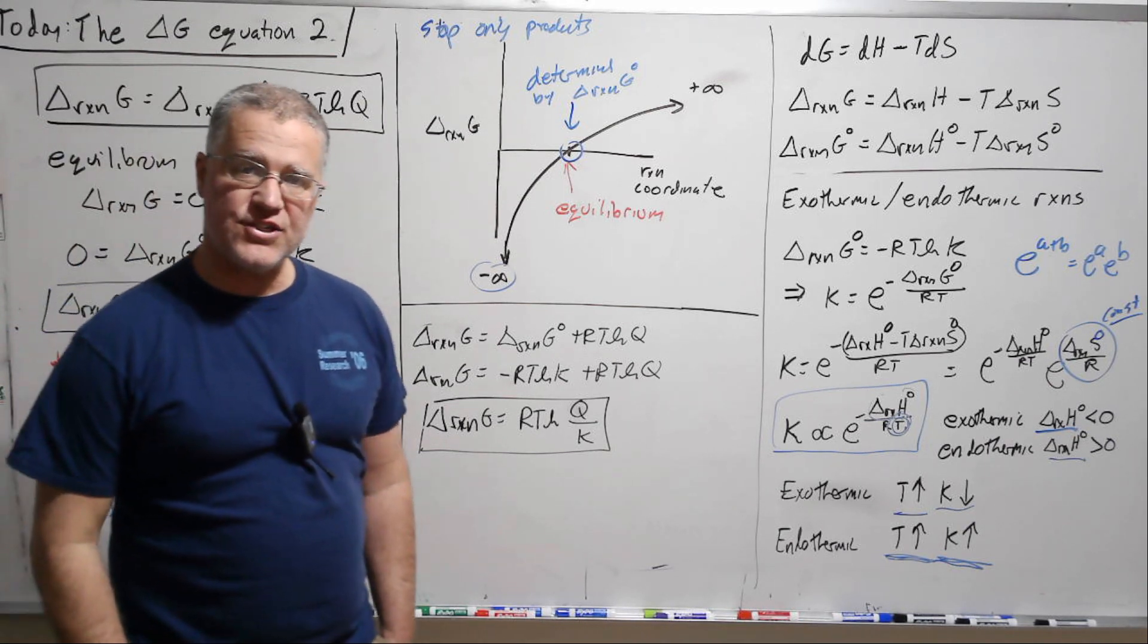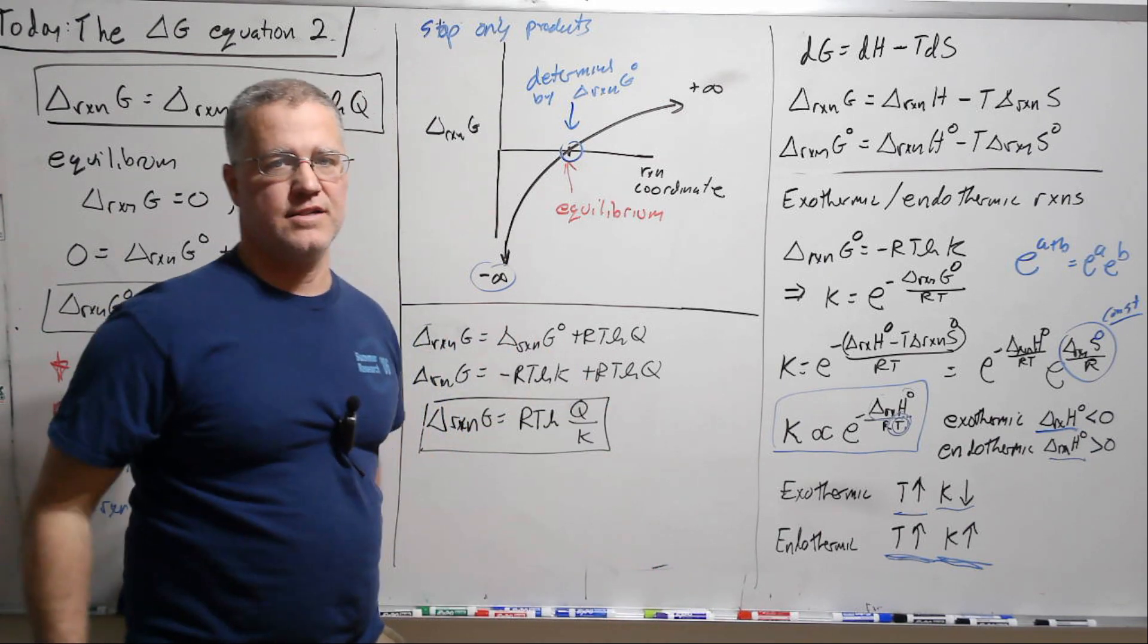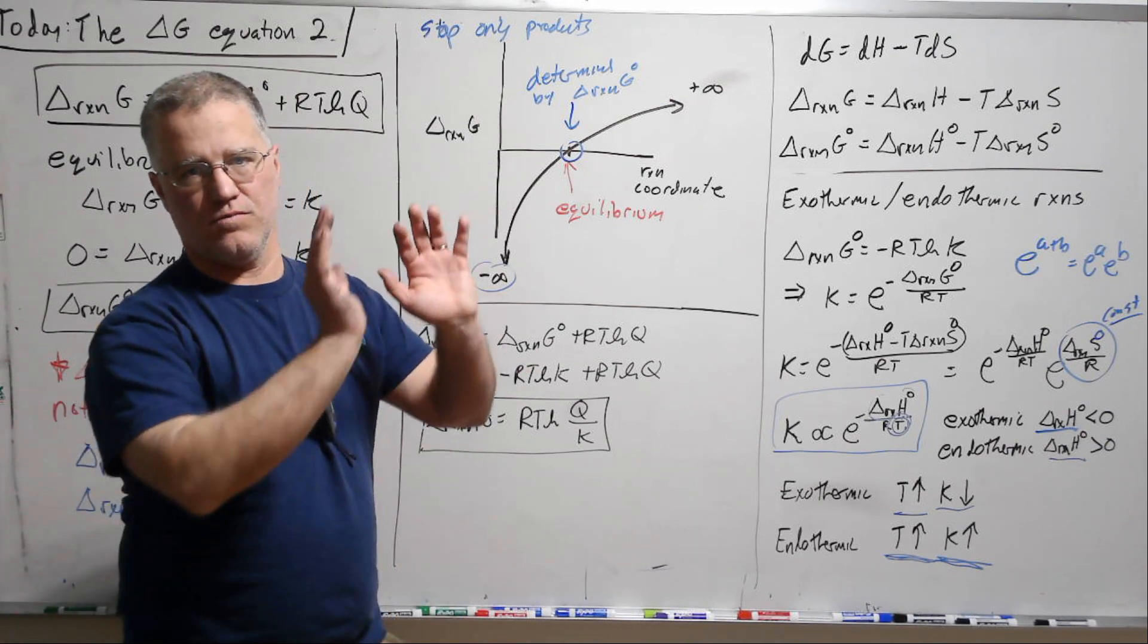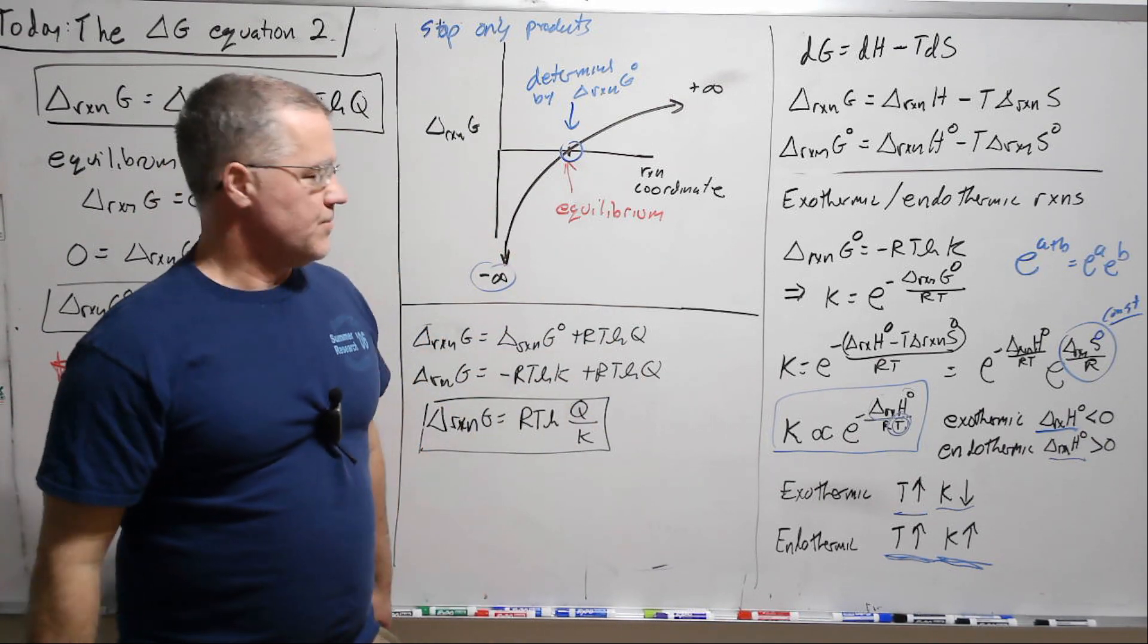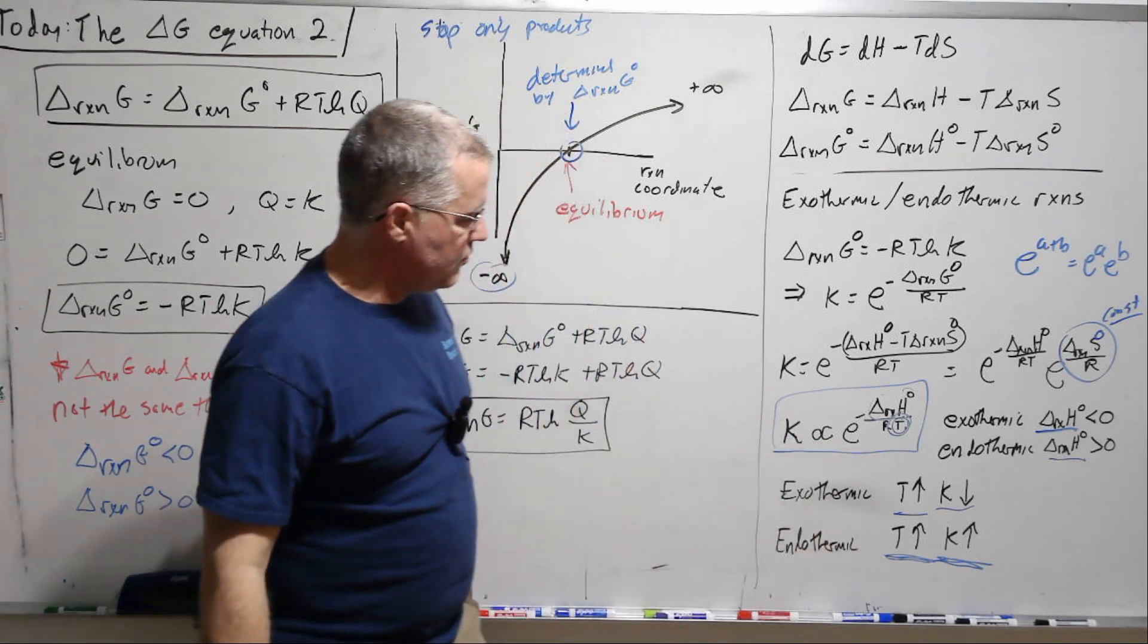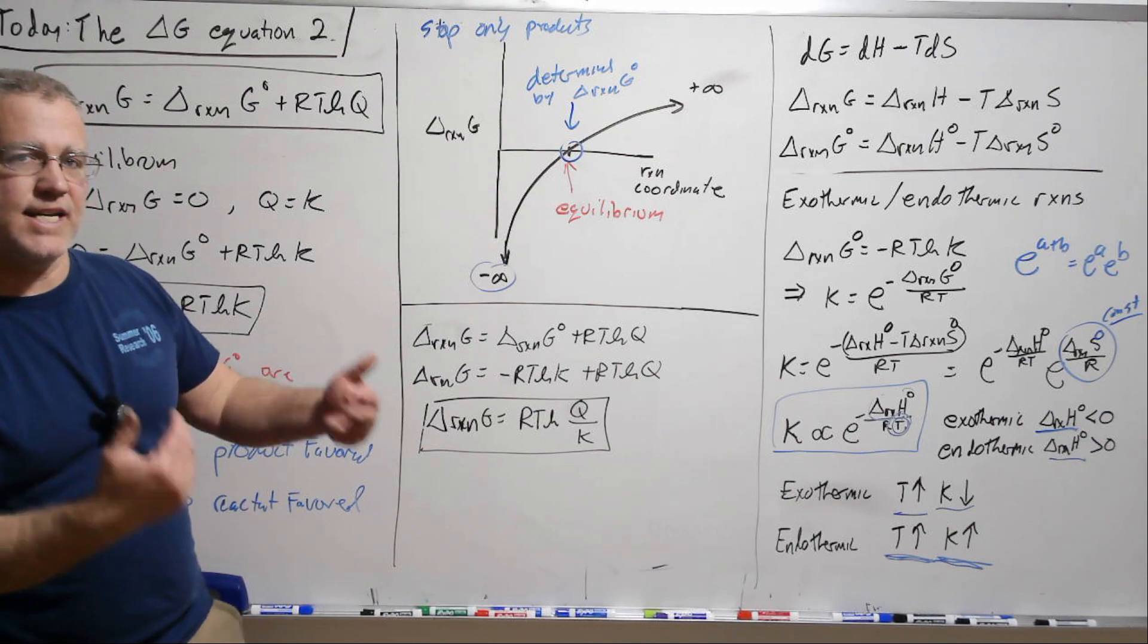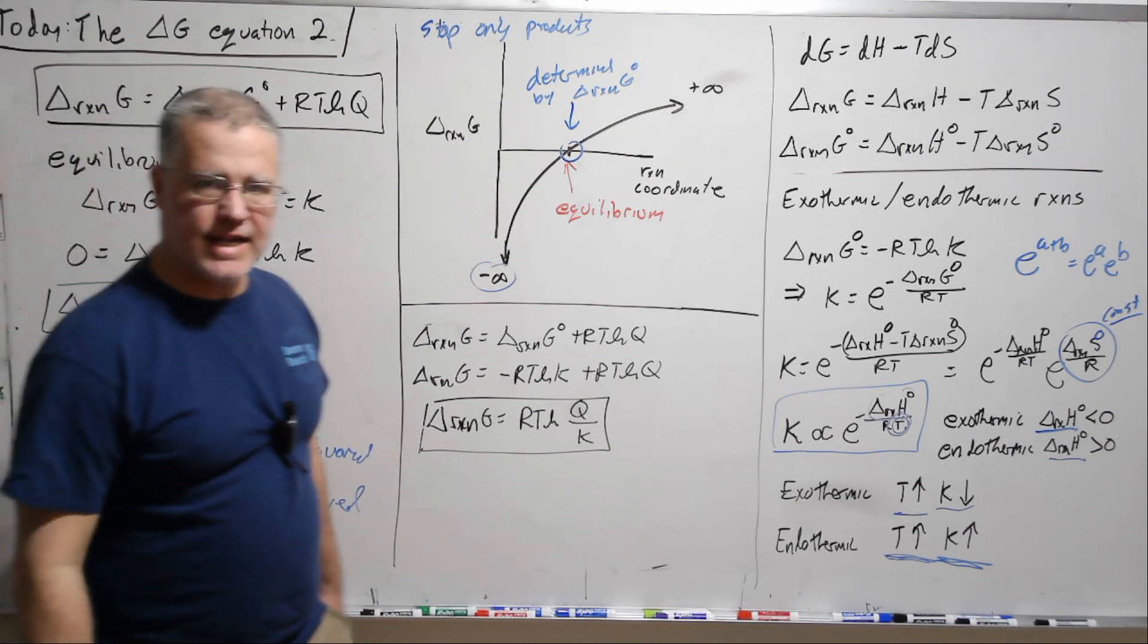So depending on the reaction, if you're in the lab and you want to get more product because we want to get that equilibrium constant more towards the product. Well, if it's an exothermic reaction, then we'll want to cool the system. If it's endothermic, we'll want to heat the system. All right.